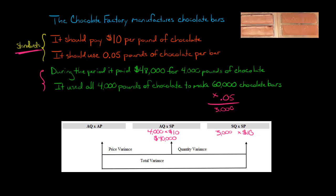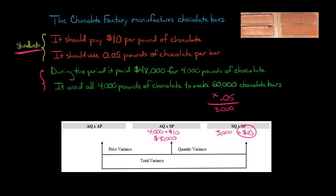Don't get fooled — don't put the 60,000 here, because we want to compare pounds to pounds. So 3,000 pounds times $10 standard price — representing how many pounds it should have taken to make 60,000 chocolate bars times the standard price — gives us $30,000.